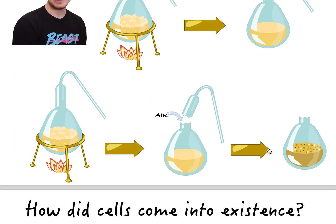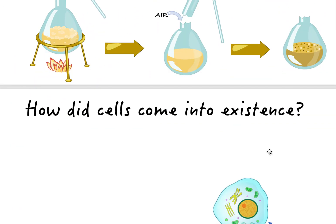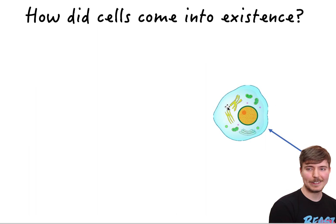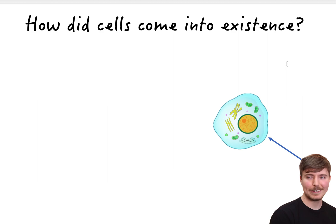That's how we proved this aspect of cell theory. Now, we are a multicellular organism made up of billions of cells, but cells can also exist by themselves — like bacteria, which are single-celled organisms. So how did these cells come into existence? How did the very first cell ever appear?